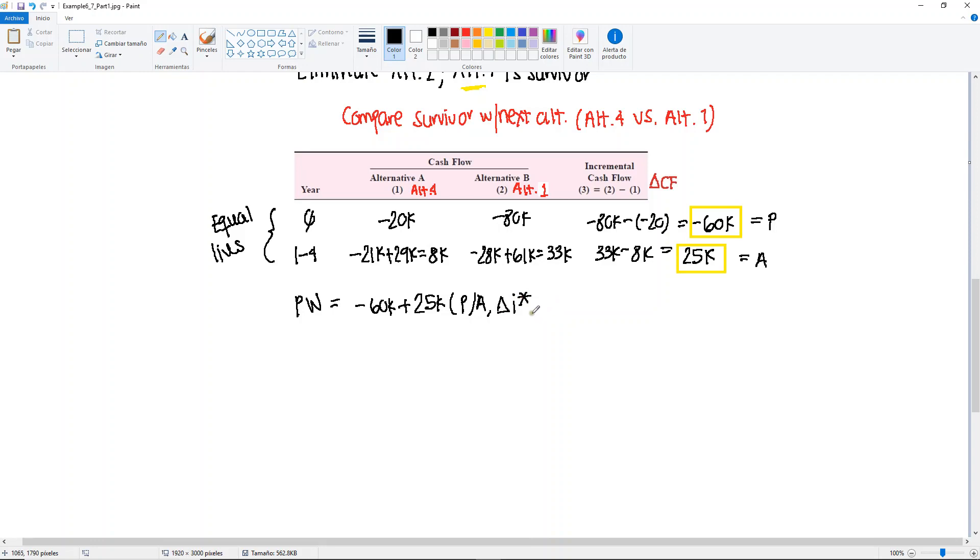I'm going to again skip the step for the trial and error and interpolation. You will get 24.1%.